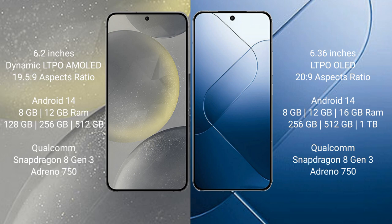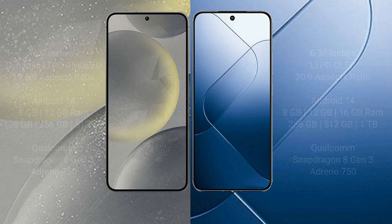Samsung Galaxy S24 features a Qualcomm Snapdragon 8 Gen 3 processor. Xiaomi 14 also comes with 8GB to 16GB RAM and 256GB to 1TB internal storage, powered by a Qualcomm Snapdragon 8 Gen 3 processor.